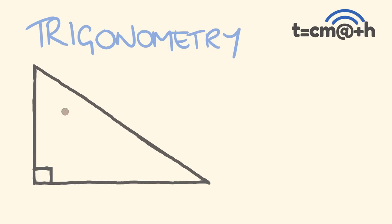Trigonometry deals with this particular shape here, a right angle triangle. It's a branch of mathematics that studies the relationships between the sides of this triangle and the angles that occur within it. We can use an angle and a side length to work out other side lengths, or we could use two side lengths to work out unknown angles. That's what trigonometry allows us to do.